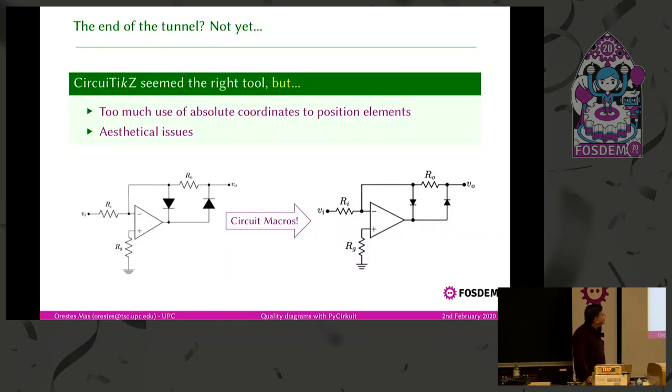Well, is that the end of the story? Not at all, because circuit TikZ is a good choice, but for us has some minor issues, aesthetical ones and also practical ones. When you write a circuit in TikZ, you end up in circuit TikZ, you end up specifying absolute coordinates all the time, and this is not very good. Also, if you look at the graphic on the right, you see that this other graphic is more consistent, the line width is more consistent, the elements are better proportionate, and the syntax is clearer in some ways. So we decided to use a thing called circuit macros, which I describe a bit later.